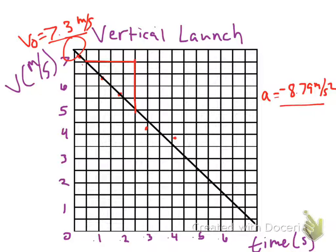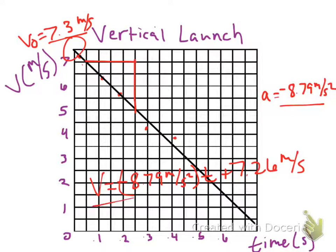So the equation of the line is: velocity = −8.79 m/s² × t + 7.26 m/s, or roughly 7.3 m/s for your value. To explain how they would find the initial velocity, you can say: plot velocity versus time and read off the vertical intercept, which is the initial velocity. Alternatively, you can plot the position versus time data and draw a tangent line at the very beginning to find the initial slope.